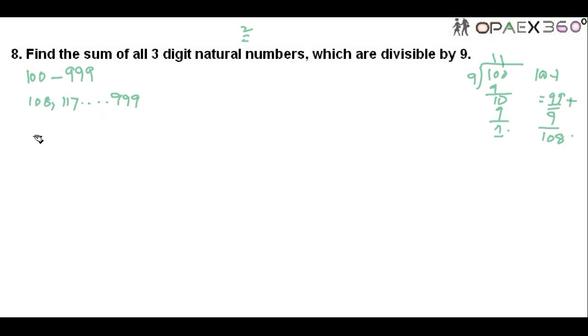Now you have to find the sum of all the three-digit natural numbers which are divisible by 9. This is the series: 108 plus 117 plus etc., up to plus 999. A is equal to first term 108. What is D? The difference is 9. What is N? You do not know. What is the last term? 999.